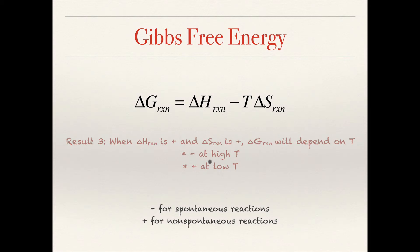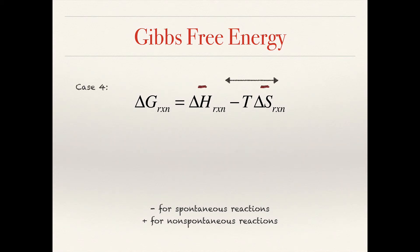Case four is the reverse of case three: an exothermic reaction with a negative value for ΔS. The minus TΔS term is going to be positive. Again, we have a battle between the magnitudes of ΔH and TΔS. If ΔH wins out, ΔG will be negative, favoring spontaneity. If the TΔS term wins out, we will have a positive value for ΔG, disfavoring spontaneity, and we can't say anything until we know the temperature.